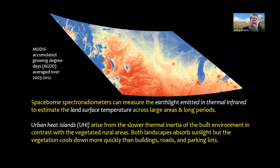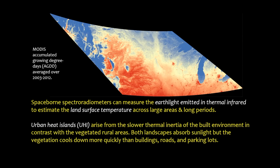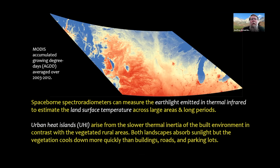Getting back to land surface temperature: we can use spaceborne spectroradiometers to measure earth light in the thermal infrared to estimate land surface temperature across large areas. Urban heat islands arise from the slower thermal inertia of the built environment compared to vegetated rural areas. Urban heat islands really come out at night — there is some difference during the day, but it's particularly at night that those differences arise. Both landscapes absorb sunlight during the day, but vegetation in rural areas cools down much more quickly than the built environment.